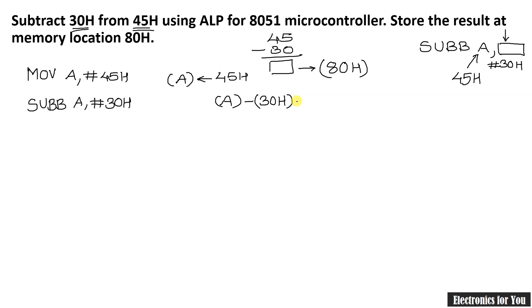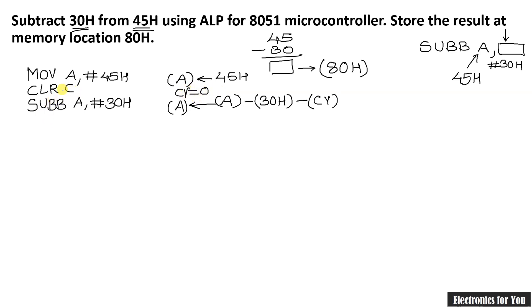Actually, it is also the carry flag which is to be subtracted, and the result will be stored into the accumulator. The problem is that if the value of this carry flag is 1 — means if the carry flag is set to 1 — it will affect the result. And therefore, you have to clear this carry flag. For that, you have to use the CLRC instruction, that is clear carry, meaning carry flag equals 0.